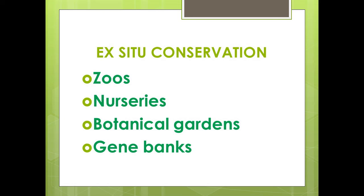Strategies for biodiversity conservation include conserving all varieties of food plants, timber plants, livestock, microbes, and agricultural animals. All economically important organisms should be identified and conserved. Unique ecosystems should be preserved first, and resources should be utilized efficiently.